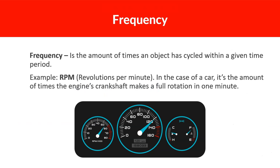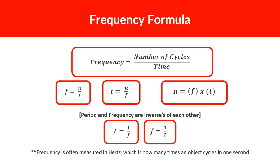Now we're talking about frequency. Frequency is the number of times an object has cycled within a given time period. RPM stands for revolutions per minute — in a car, it's how many times the engine's crankshaft makes a full rotation in one minute. Frequency is equal to the number of cycles divided by time. For example, if a yo-yo spins five times in one second, the frequency is 5 hertz.